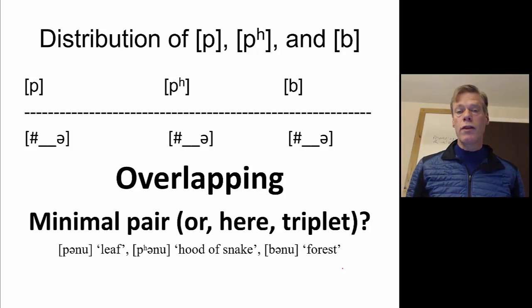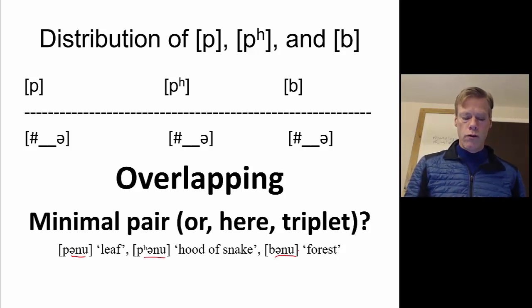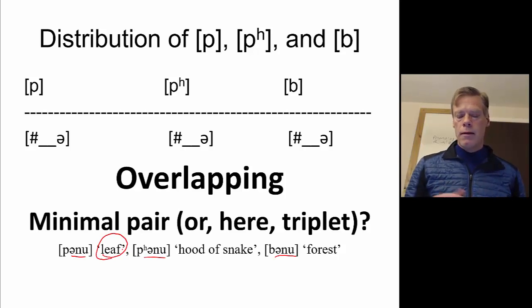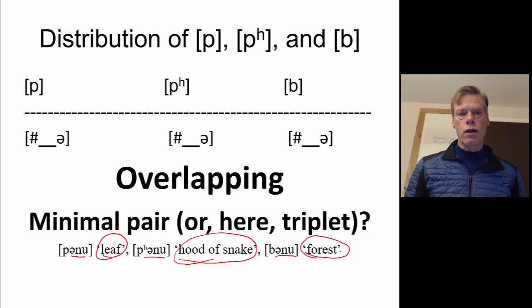We do find a minimal triplet: each can occur at the beginning of a word followed by -anu, and moreover they mean different things. The one with a regular released P, panu, means 'leaf.' The one with the aspirated P, pʰanu, is 'the hood of a snake.' And the one with the voiced B, banu, means 'forest.' Therefore, they are in contrastive distribution, meaning these are allophones of three different phonemes. See you next time.